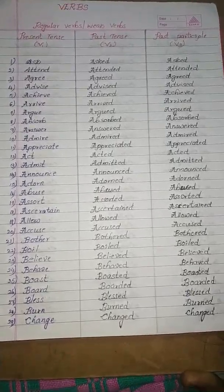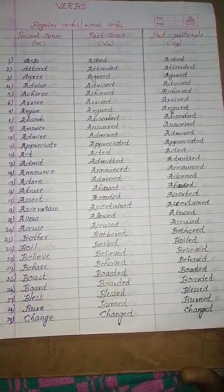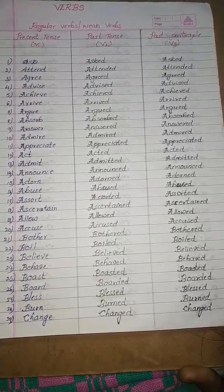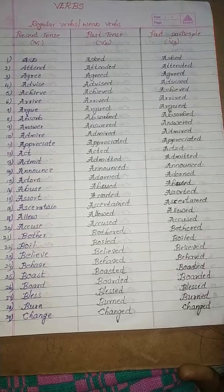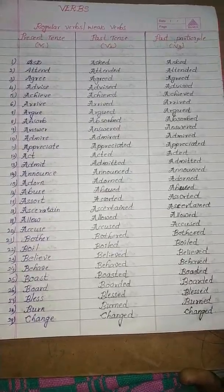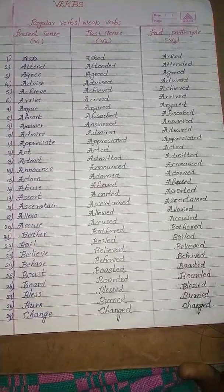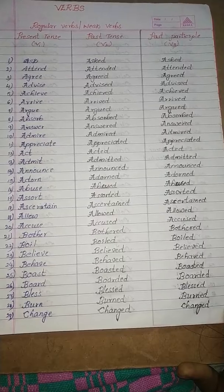So V1, V2, V3, V4 — there are four verb forms. Verb1, Verb2, Verb3, Verb4. Verb1 is used for regular actions, we use this.